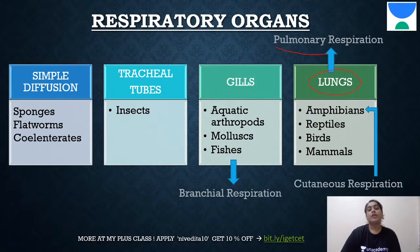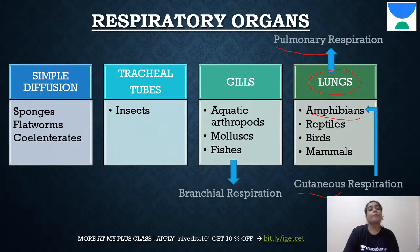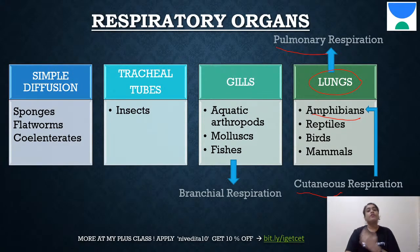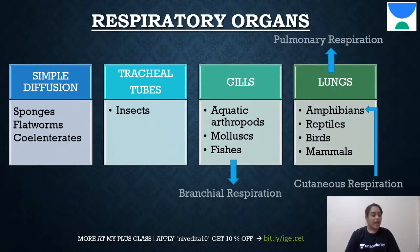The most advanced form is lungs — called pulmonary respiration, seen in amphibians, reptiles, birds, and mammals. Apart from pulmonary respiration, certain amphibians like frogs use their moist skin for respiration — that is called cutaneous respiration. So we have dealt with the different kinds of respiratory organs.